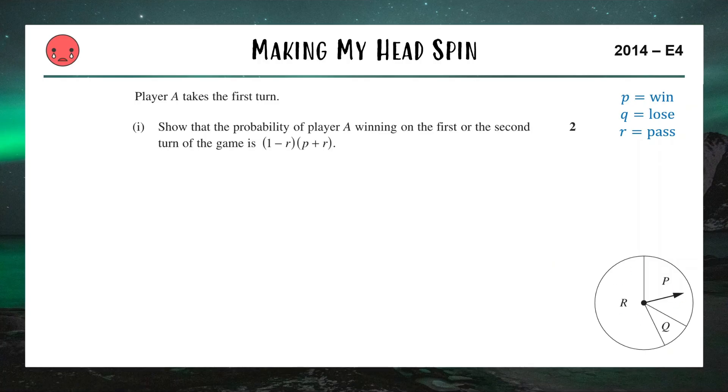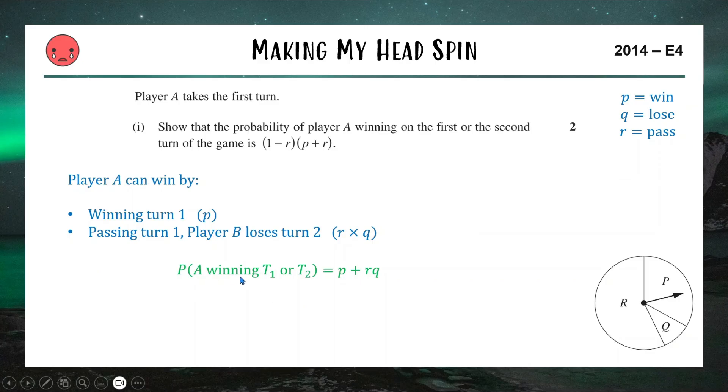Or I could land on R which then passes it to you and then you fumble it by spinning onto Q, you lose, I win, sucked in. So that's what we're going to try and set up for our calculation. We're going to say player A or player me can win by either winning on the first turn or I can pass it to you and then you land on the losing sector. So combining this into a probability, we just have P and then RQ and we could have either of these happening. So we're going to add them together and say the probability of winning on the first or second turn is P plus RQ. Now the issue here is that it doesn't look like what the question told me to get.